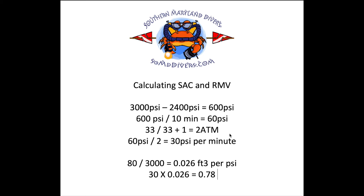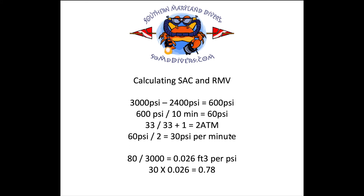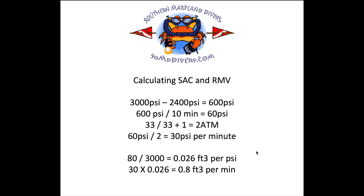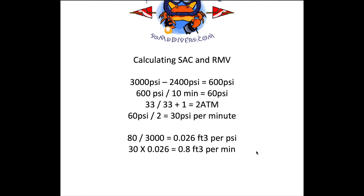Since we already know we use 30 psi per minute at the surface, we do 30 × 0.026 and we get 0.78 cubic feet per minute — that is your respiratory minute volume at the surface. A good rule of thumb here: even though you got fairly exact numbers, you want to err on the side of caution, so a lot of people — and it's good practice — round that up to the next whole number. So 0.8 cubic feet per minute is your respiratory minute volume.